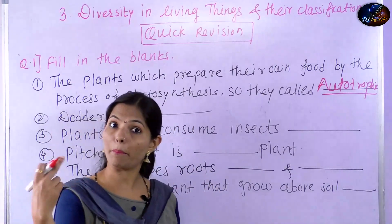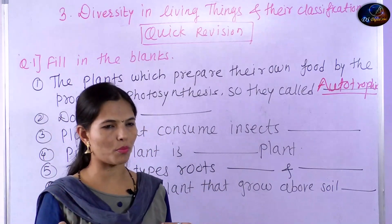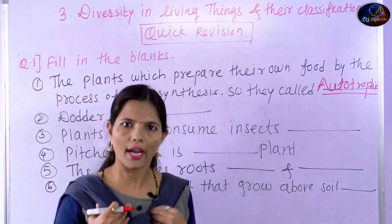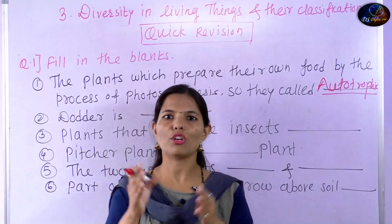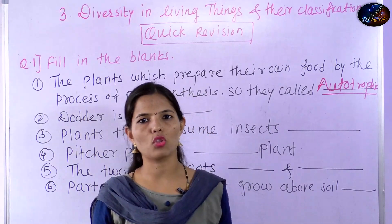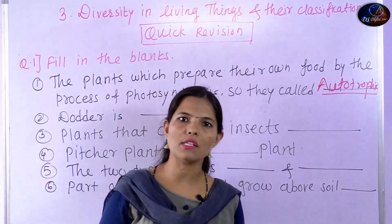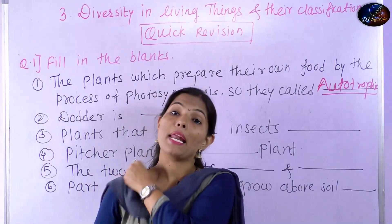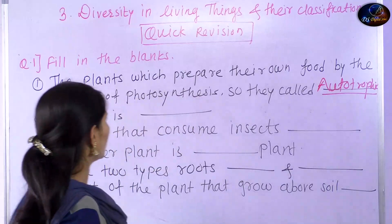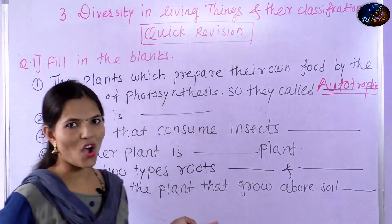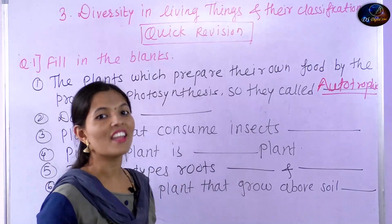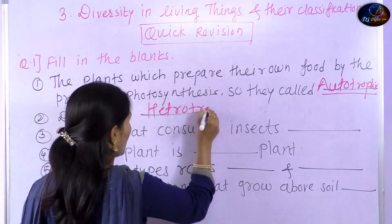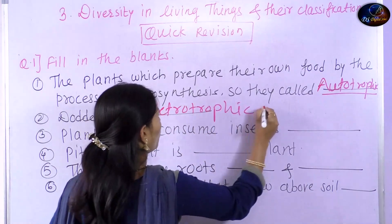Heterotrophs depend on other plants for their nourishment. We are also heterotrophs because we depend on other food sources — plants and animals. So we are heterotrophs. There is also a heterotrophic plant — the daughter plant story. The daughter plant is a heterotrophic plant.